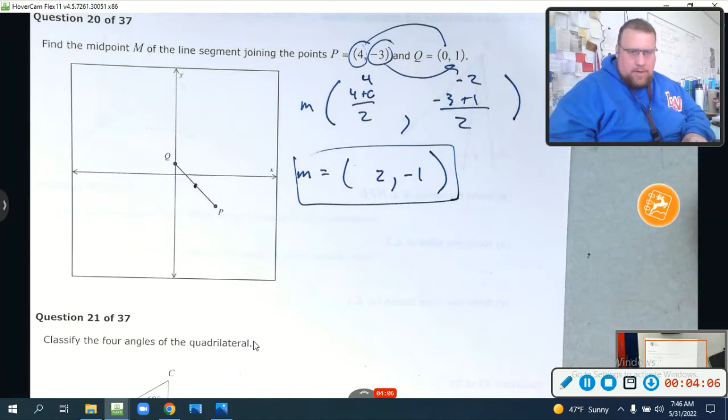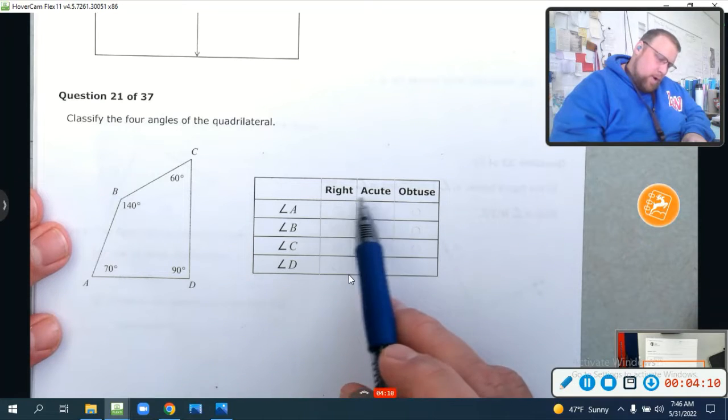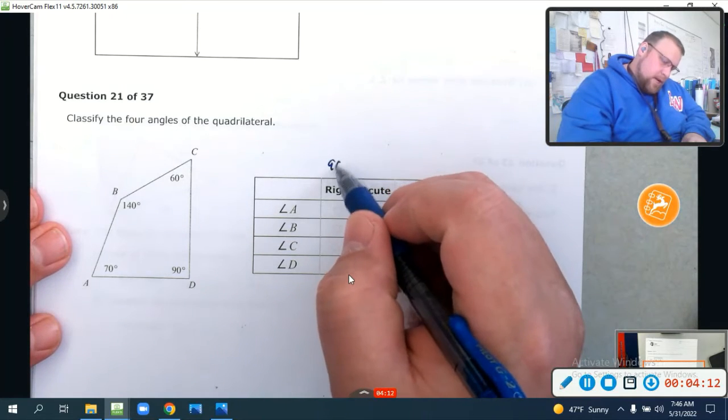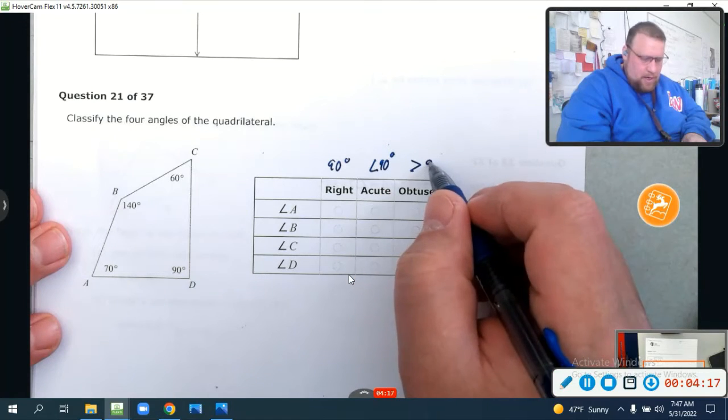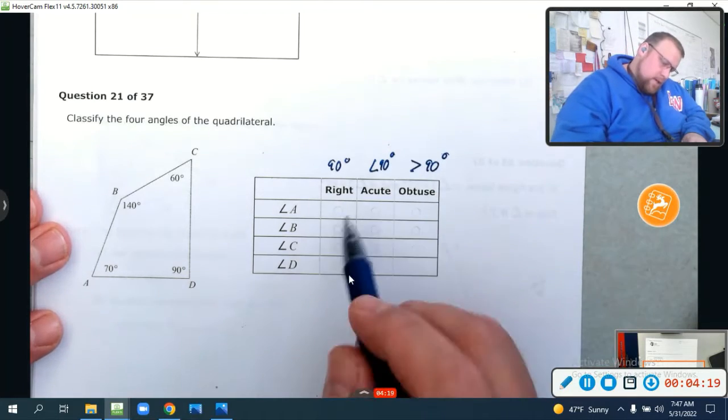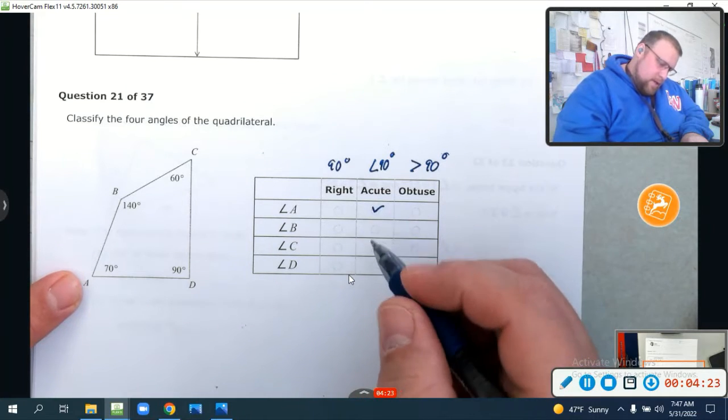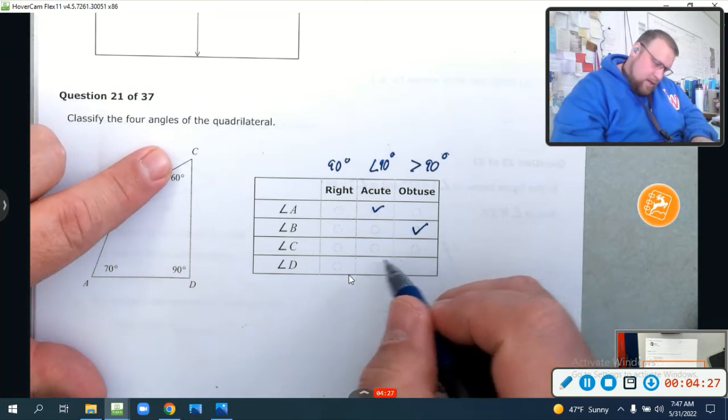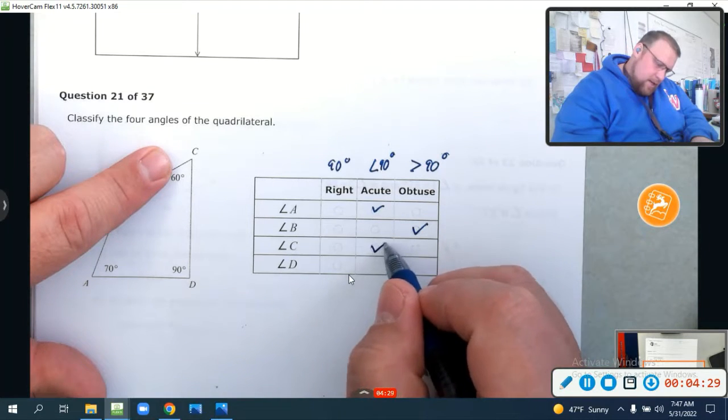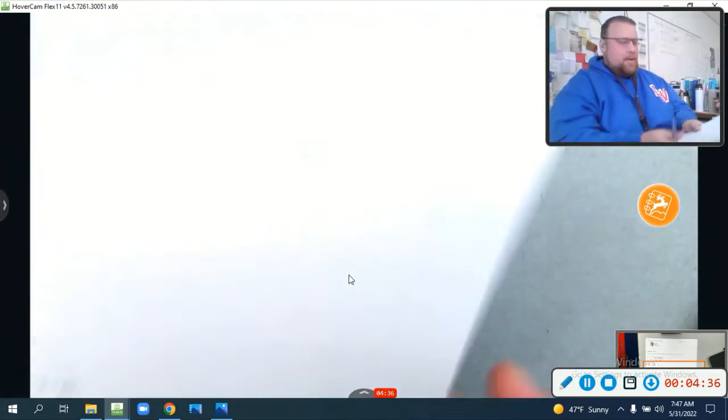Let's take a look at some angles here. We need to indicate whether they're right, acute, or obtuse. Remember, this is 90 degrees. This is less than 90 degrees. And this is greater than 90 degrees. So, angle A, less than 90, is acute. Angle B, obtuse, greater than 90. Angle C, 60 degrees, less than 90, acute. Angle D is a right angle. That's it. Don't get hung up on those. It's not worth it.